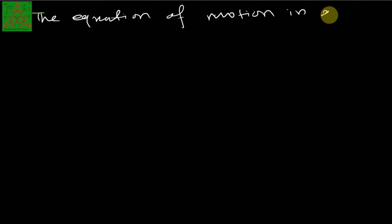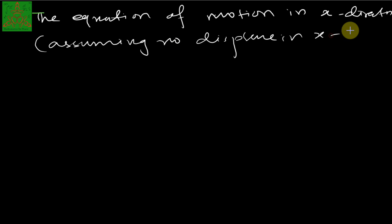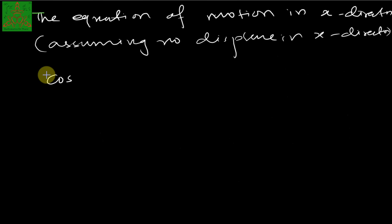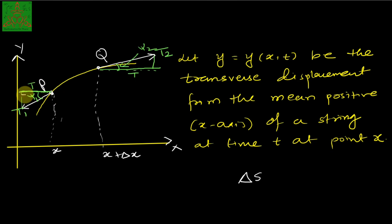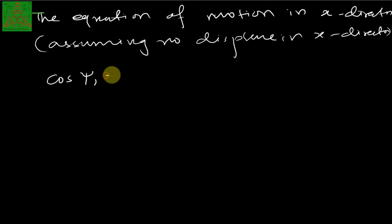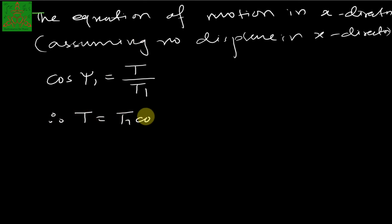The equation of motion in the x-direction, assuming no displacement in x, gives us: using cos ξ1 = adjacent/hypotenuse, where hypotenuse is T1 and adjacent is T, we get cos ξ1 = T/T1, therefore T = T1 cos ξ1.